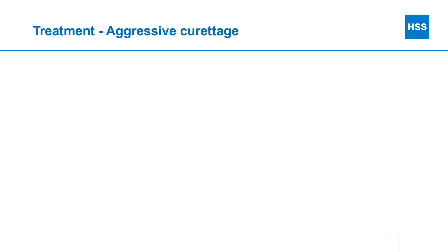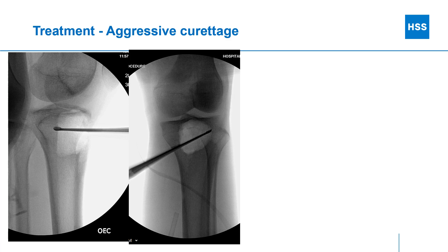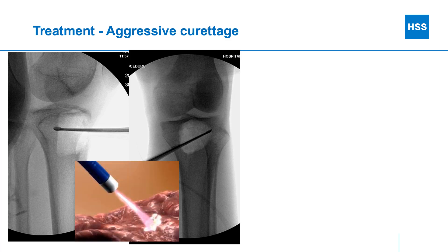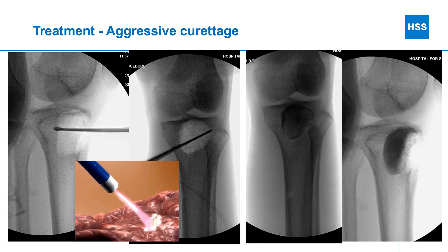The treatment of these tumors is an aggressive curettage, which means scraping away all the abnormal tumor. Here you can see that a curette is being used along all the surfaces of the tumor cavity to remove all that abnormal tissue. An argon beam coagulator is then used, which produces extreme heat and further desiccates the bone to make sure all the tumor cells are destroyed along the edges of this tumor. The void is then packed with a synthetic bone cement, which provides initial structural stability to the cavity until the bone itself is able to heal.